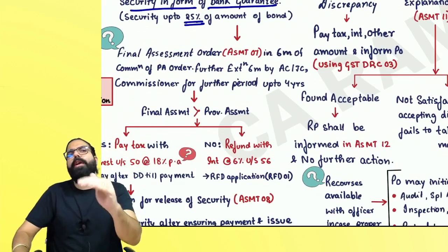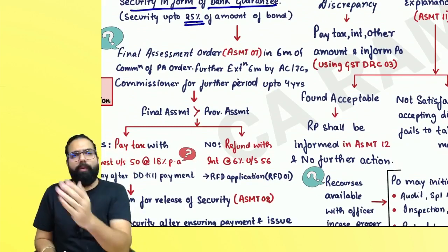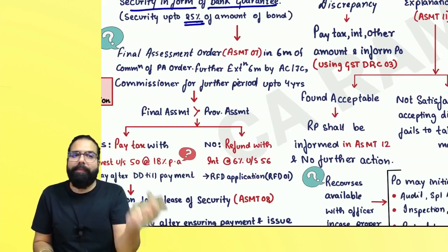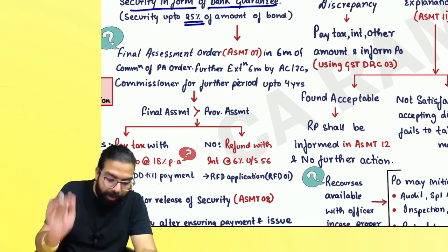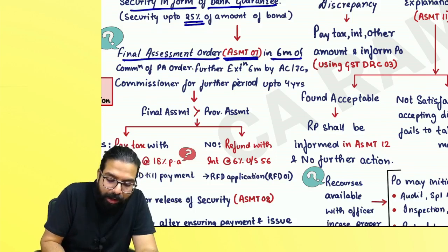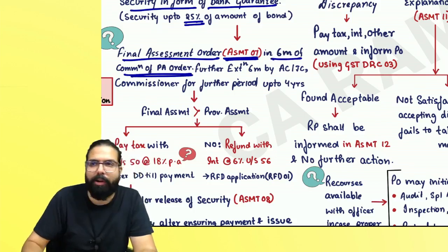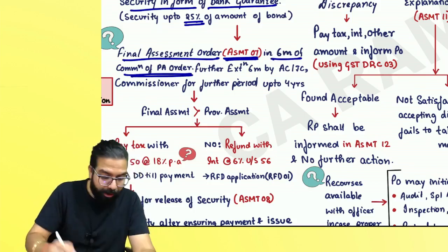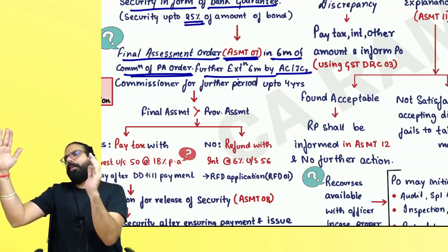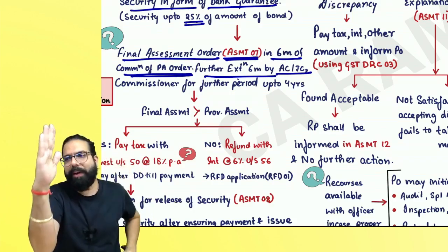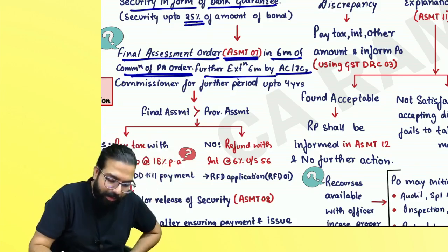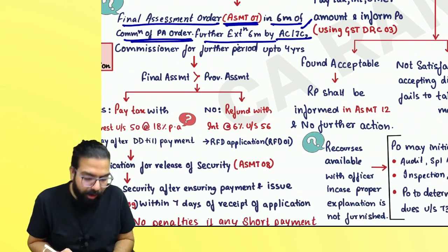Once the provisional assessment has been communicated, the final assessment order in ASMT-07 will be given within six months from the communication of the provisional assessment order. If they could not complete the final assessment within six months, a further extension of six months can be given by the AC or JC.